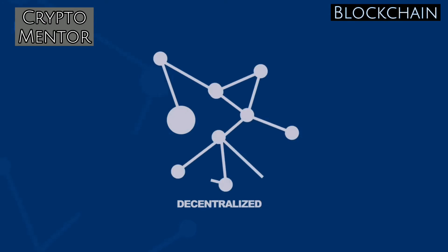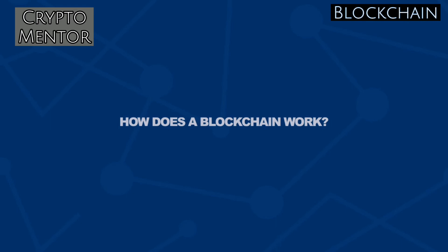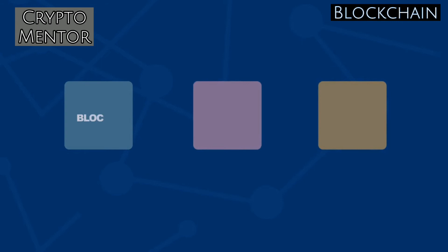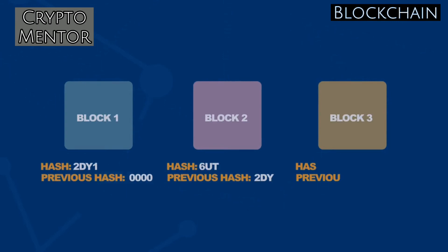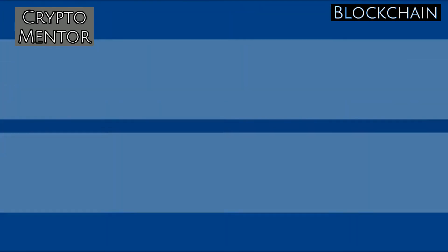The blockchain database is decentralized. Since the information is not stored in a single place, there's no chance of corruption by any hacker. Each block in a blockchain network stores some information along with the hash of its previous block. A hash is a unique mathematical code which belongs to a specific block. If the information inside the block is modified, the hash is also subject to modification — this connection of blocks through unique hash keys is what makes blockchain secure.